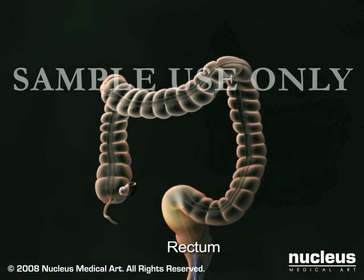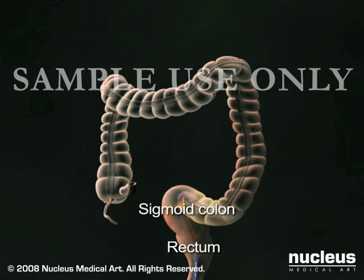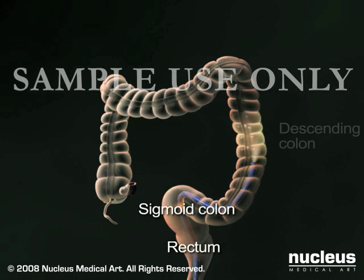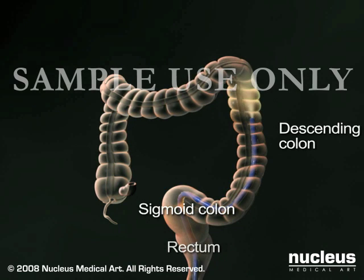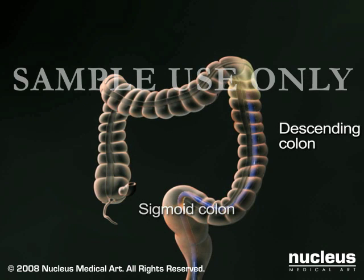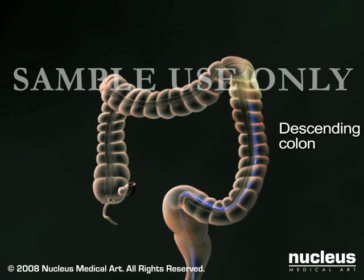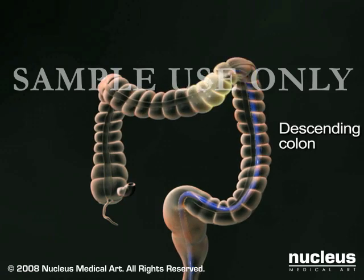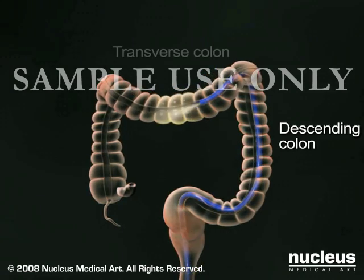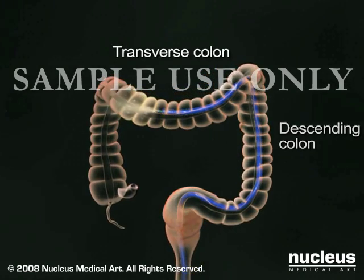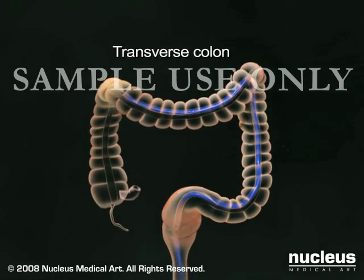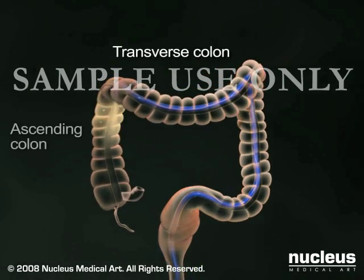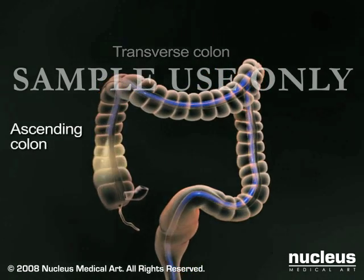In a sigmoidoscopy, the endoscope only reaches to the top of the descending colon. In a colonoscopy, the endoscope reaches through the entire length of the colon to where it connects to the small intestine.